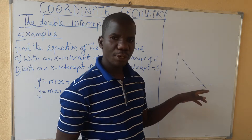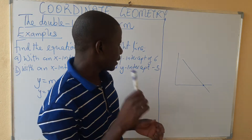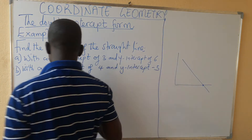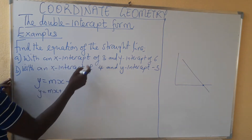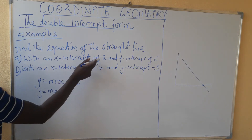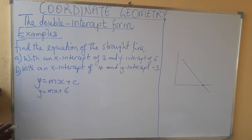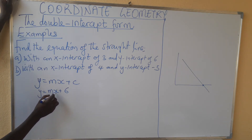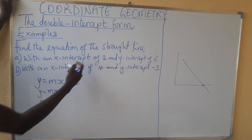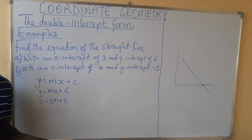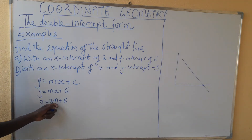At the point of the x-intercept, the y-coordinate is 0. So if our x-intercept is 3, then we are going to substitute: y = 0 and x = 3. So I am going to write it as 3m, giving 3m plus 6. We are looking for the value of m.